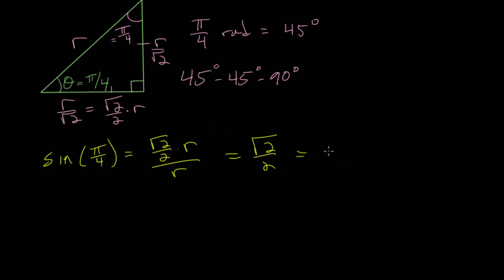But notice that the cosine of pi over 4 is also root 2 over 2, since the adjacent and the opposite sides are equal. So this is a case where sine and cosine are the exact same value, the square root of 2 over 2.